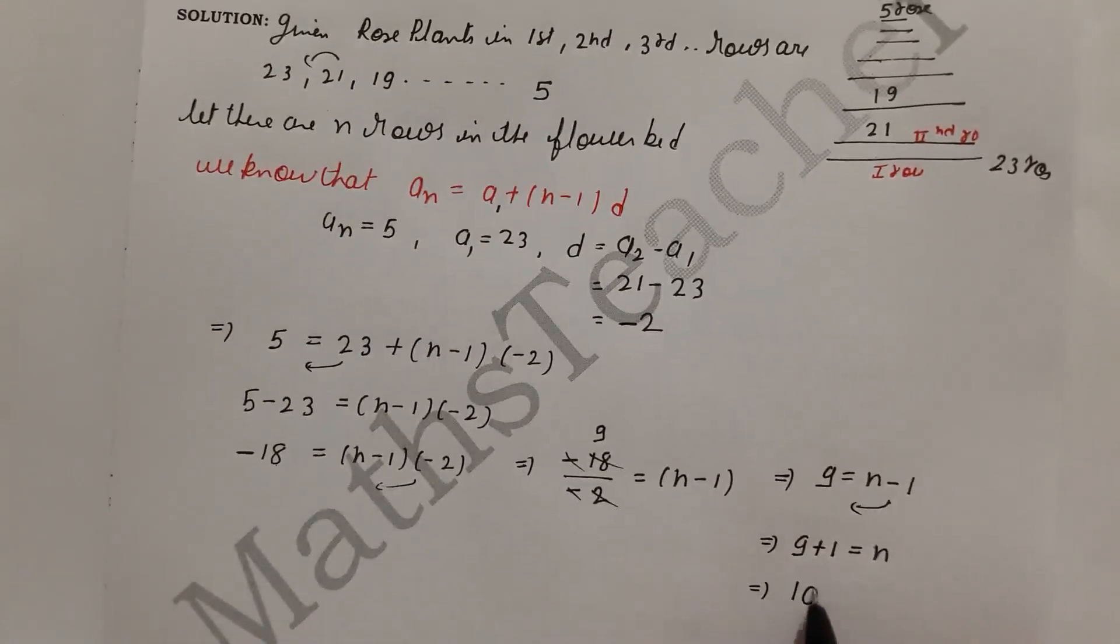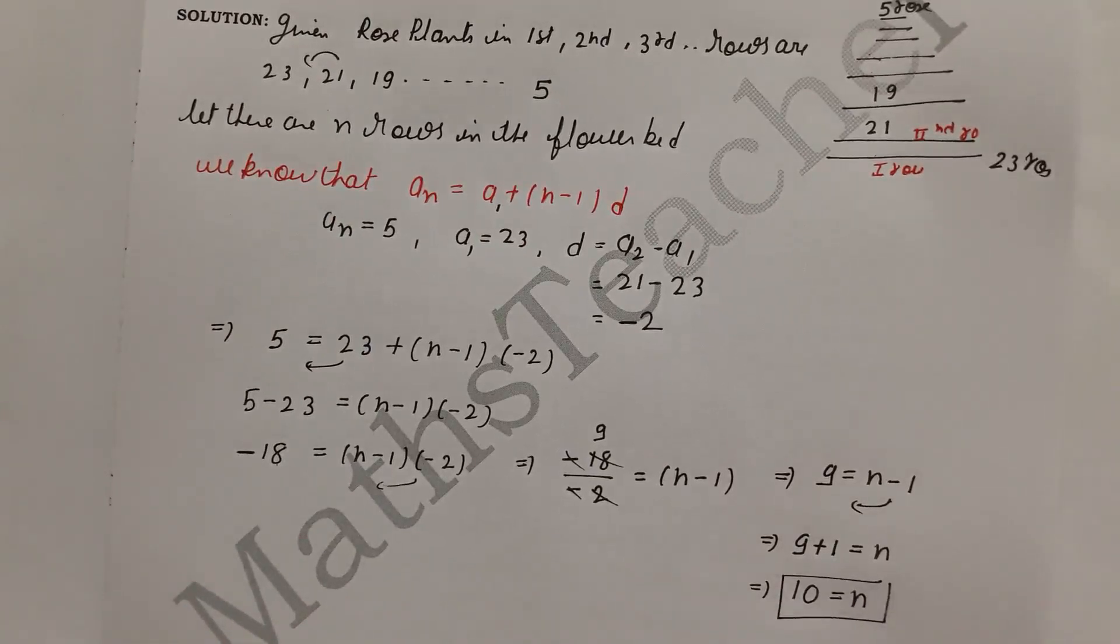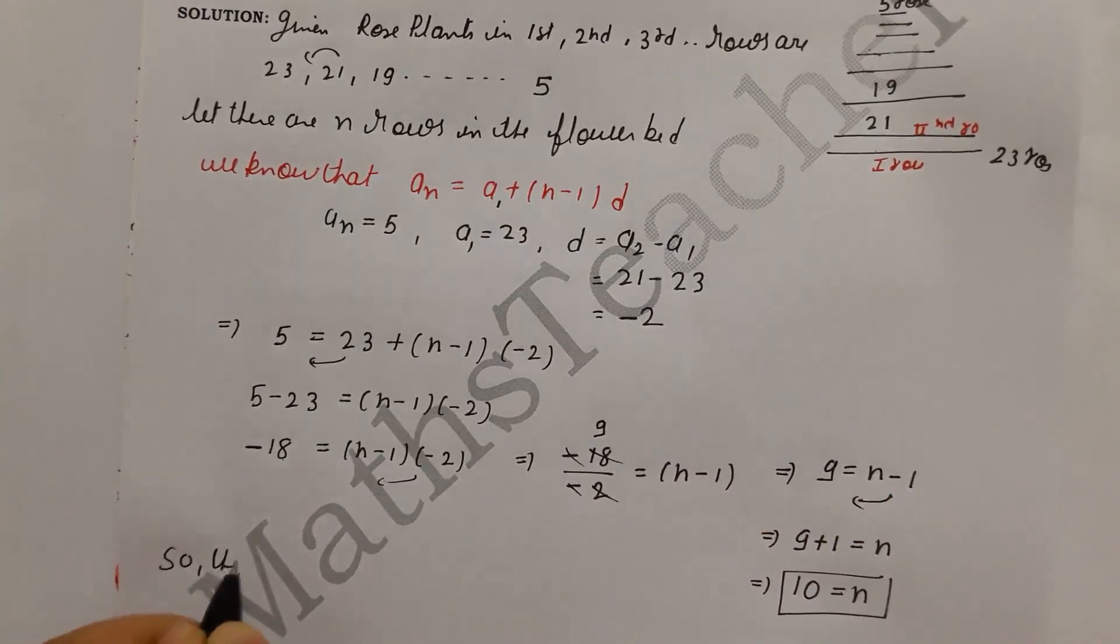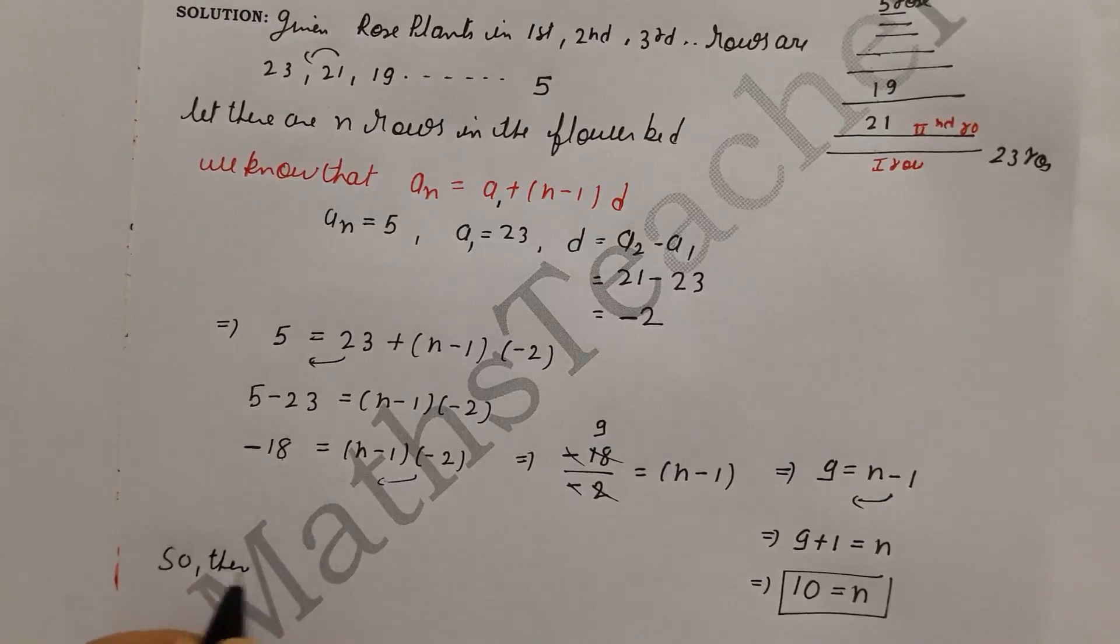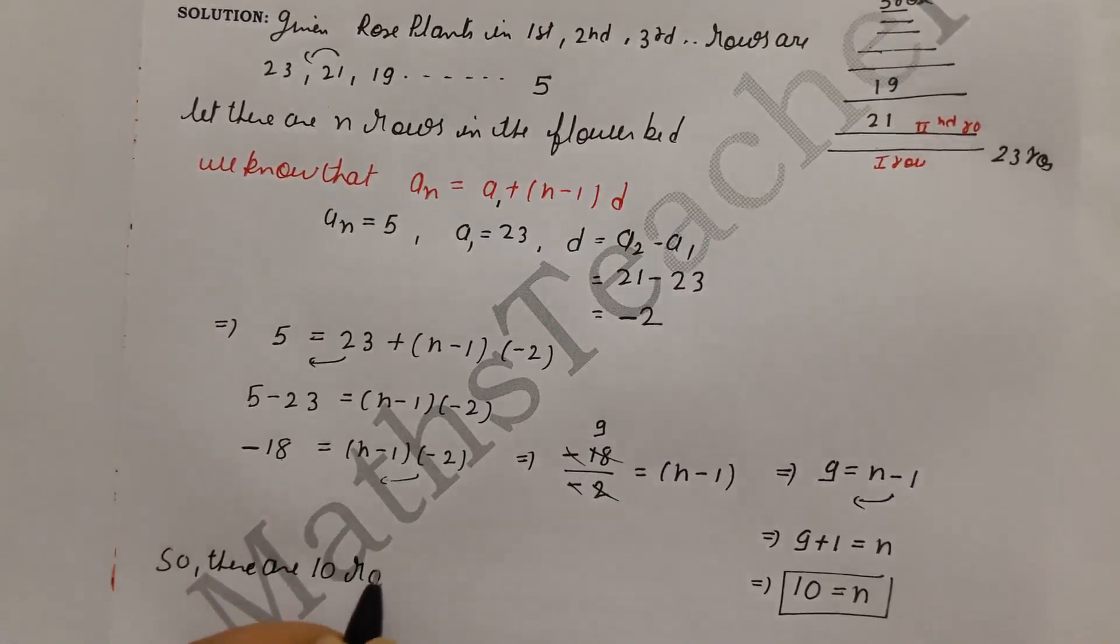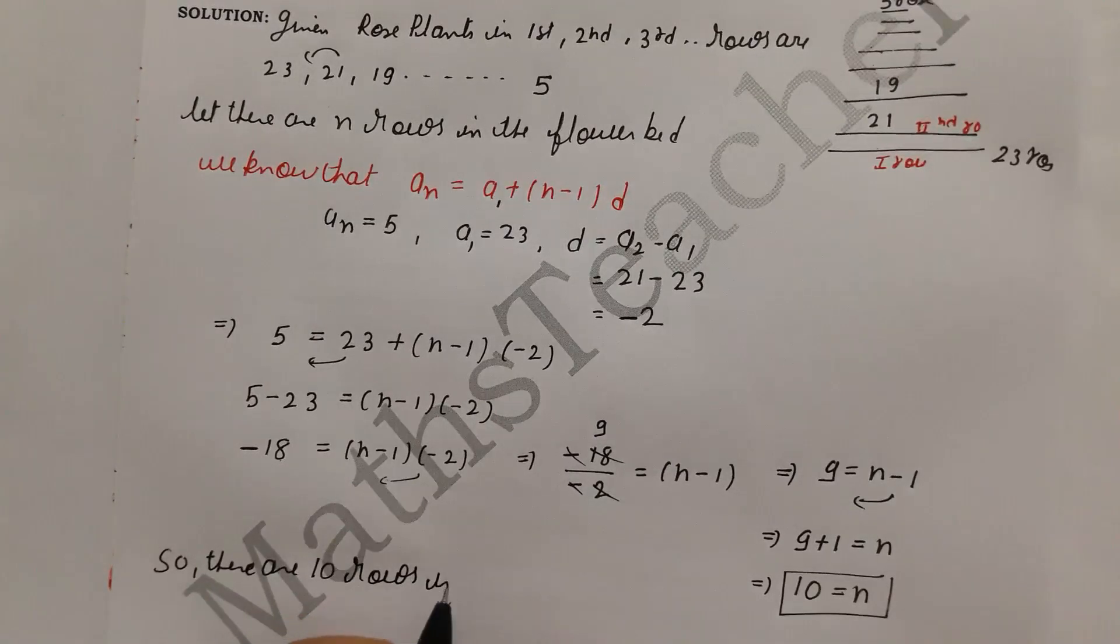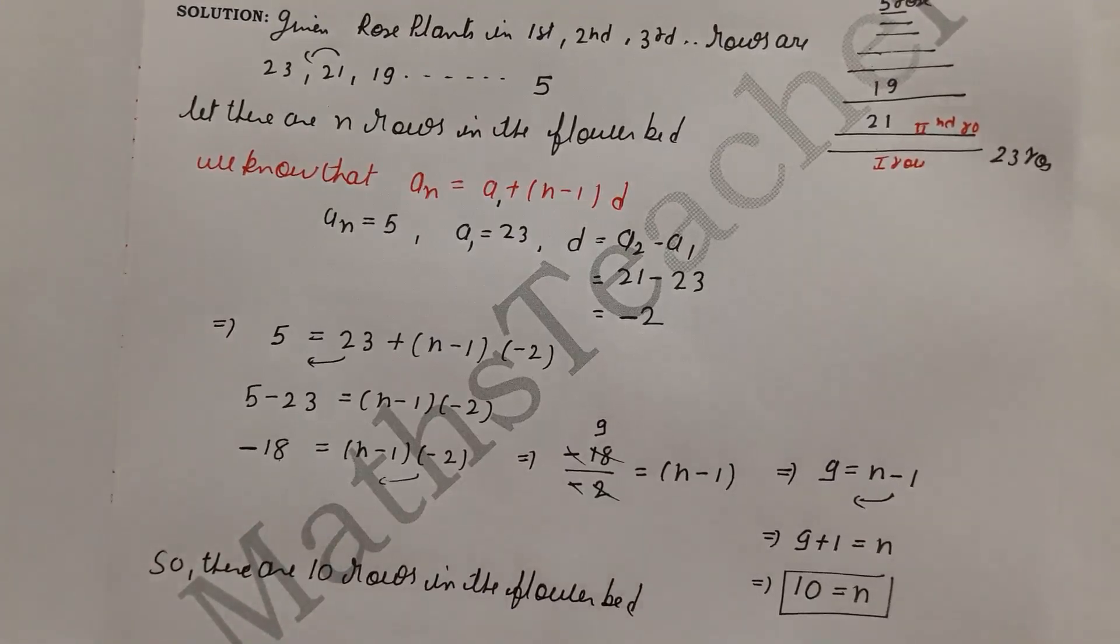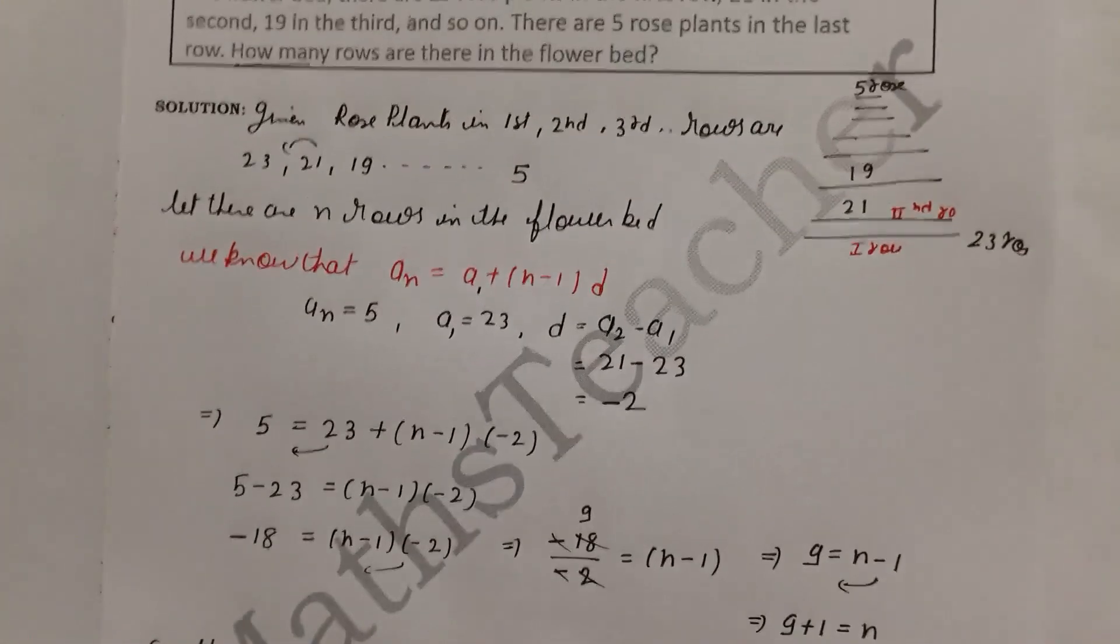Therefore, 9 + 1 = 10, so n = 10. The final answer is n = 10, meaning there are 10 rows in the flower bed.